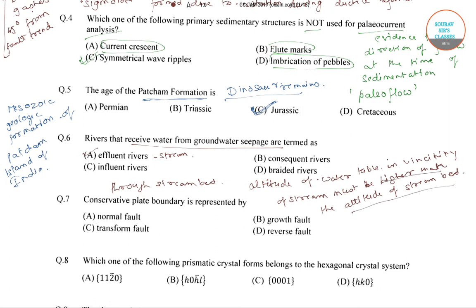What happens is that the groundwater gets into the river stream through the stream bed, and this occurs when the altitude of the water table in the vicinity of the stream bed is higher than the altitude of the stream bed. So the correct answer is that rivers receiving water from groundwater seepage are termed as affluent rivers.